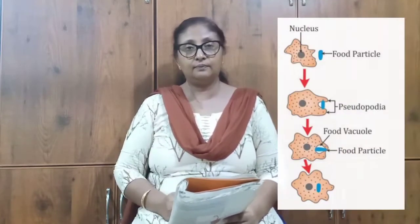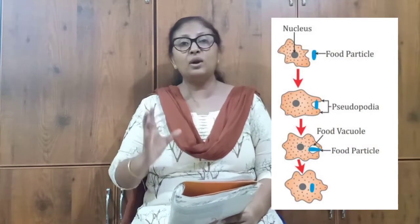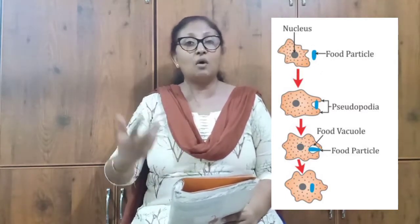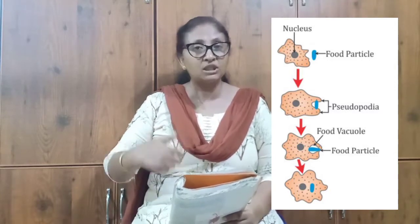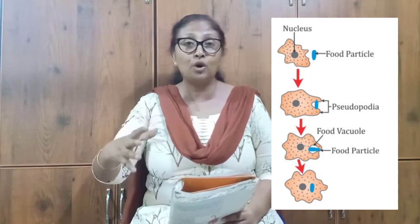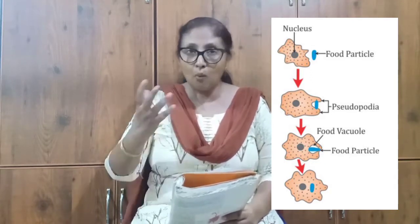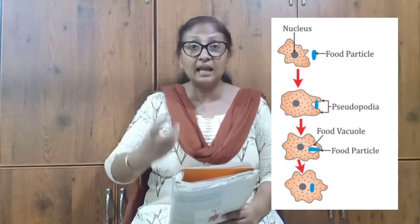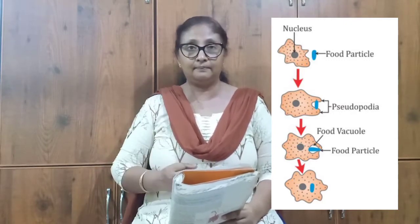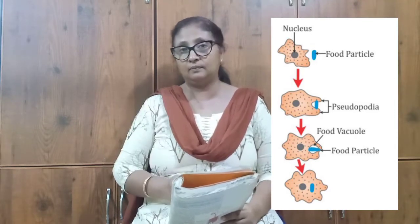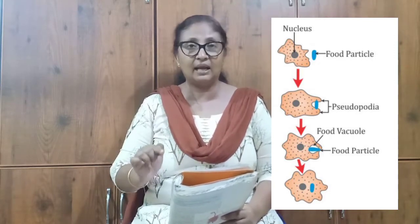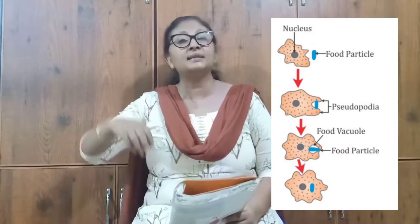Amoeba is a unicellular organism which does not have a definite shape. When amoeba comes in contact with prey, it puts forward finger-like projections called pseudopodia and engulfs the prey. Once the prey is engulfed, it is incorporated into the body of the amoeba, forming a food vacuole. This food vacuole is then digested, absorbed, and assimilated into the body of the amoeba, and the waste is ejected out.